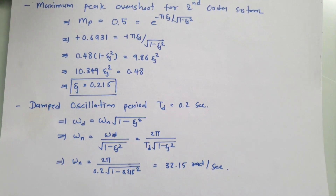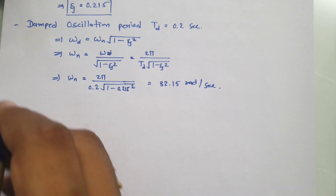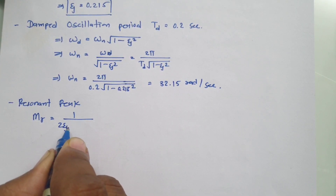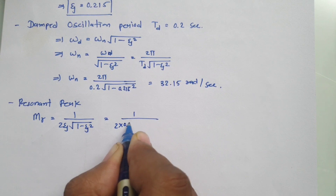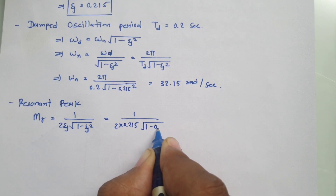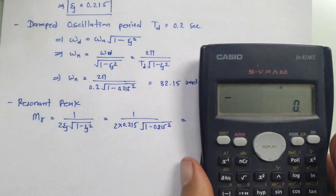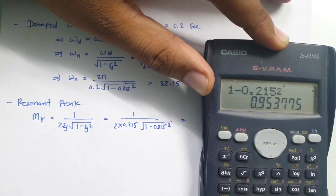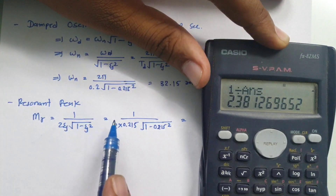Now we solve for the resonant peak. The resonant peak is defined as Mr = 1 / (2ζ√(1 − ζ²)). Substituting ζ = 0.215: Mr = 1 / (2 × 0.215 × √(1 − 0.215²)). Placing the values in the calculator gives a resonant peak Mr = 2.38.